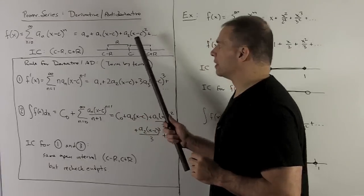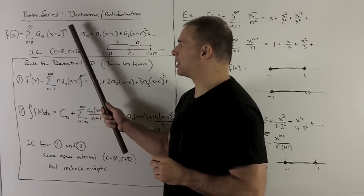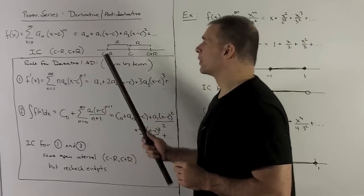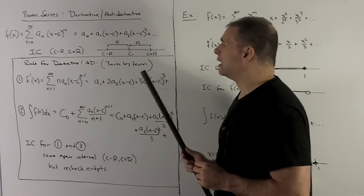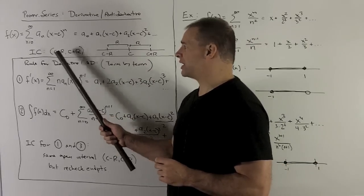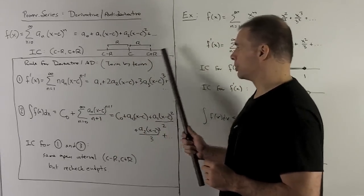Let this be our power series, a sub n times x minus c raised to the n. We're going to be centered at c. We'll write out the first few terms. And we're going to have an interval of convergence, c minus r to c plus r. There's the picture.